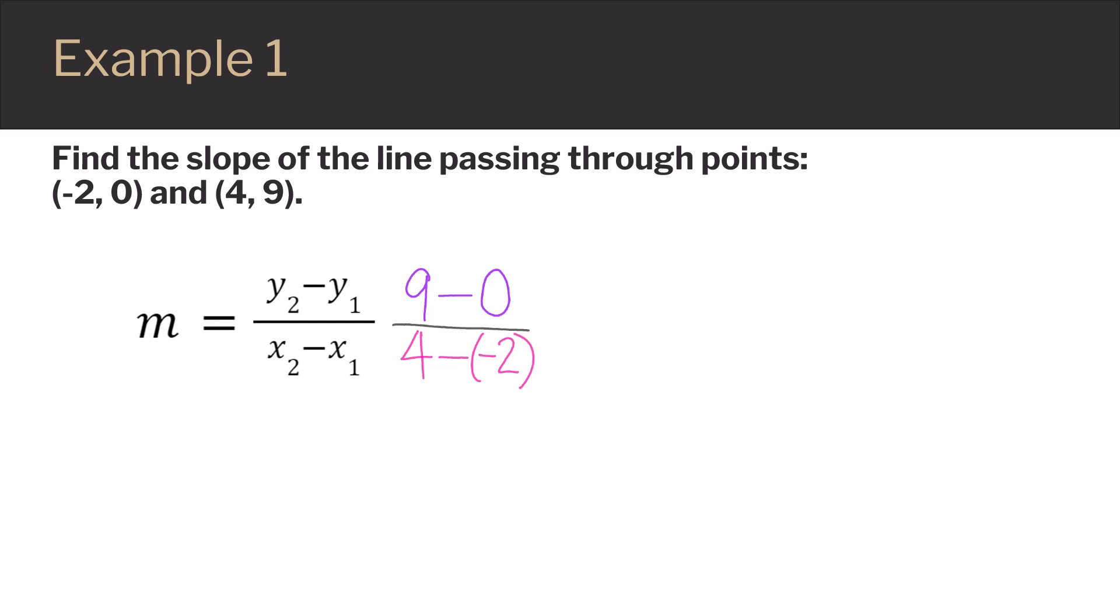From there, I want to simplify my fraction. So 9 minus 0 would give me 9. And 4 minus negative 2. Because we have minus a negative, that turns into addition. And so then this is like 4 plus 2, which would give us 9 over 6.